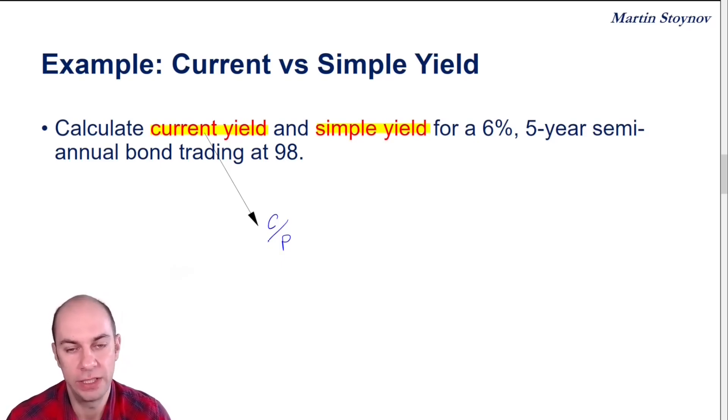And what it does is it takes the coupon plus a portion of the discount or premium amortization and divides by the price. I'll show you both anyway now. So let's get started with the current yield.